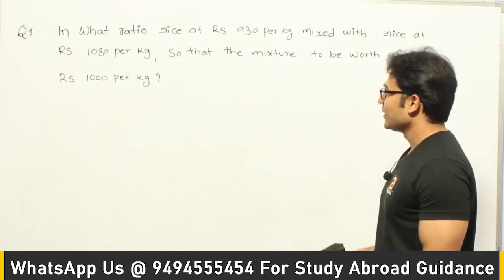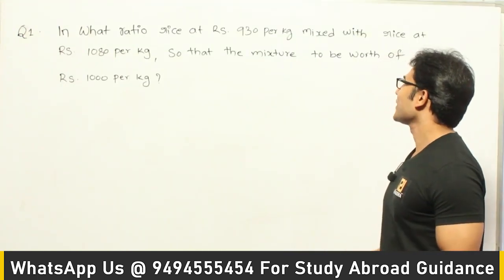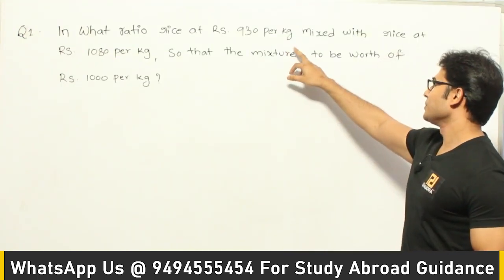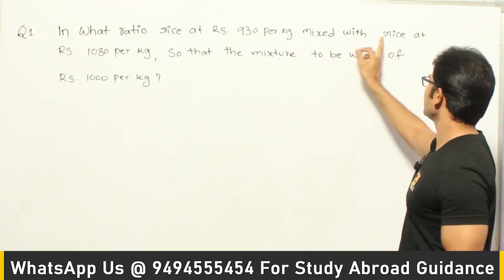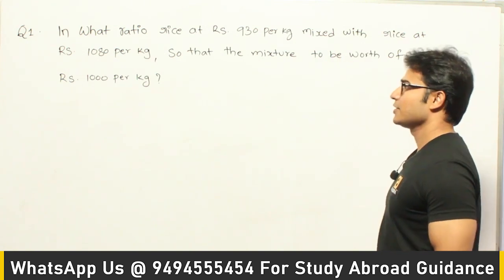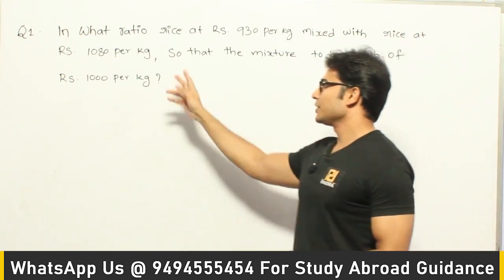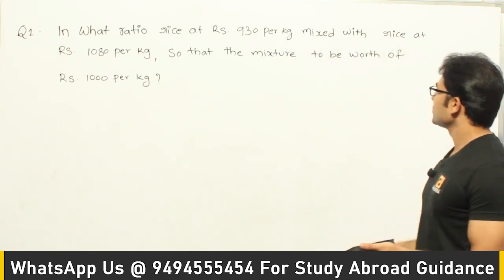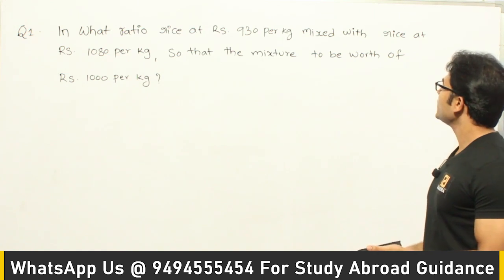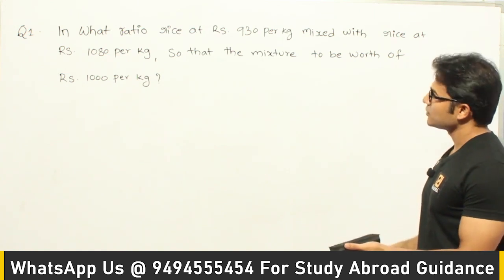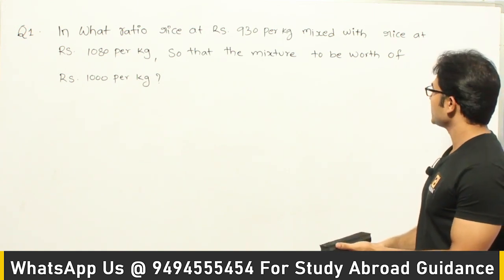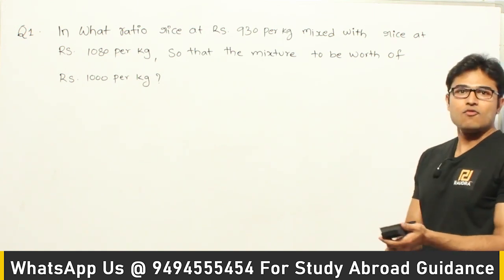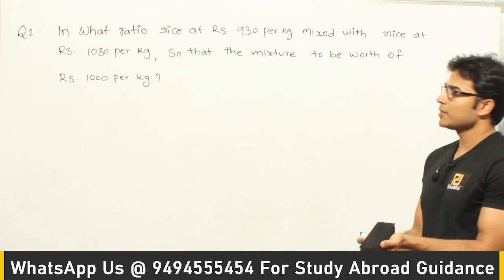Now let's see this question: in what ratio is rice at 930 rupees per kg mixed with rice at 1080 rupees per kg so that the mixture is worth 1000 rupees per kg?